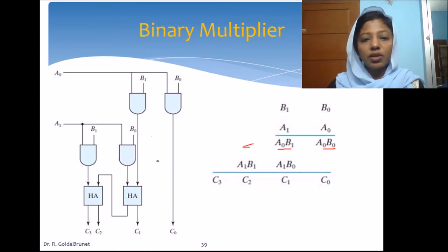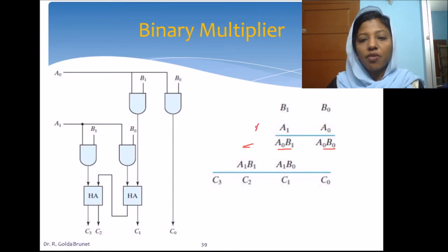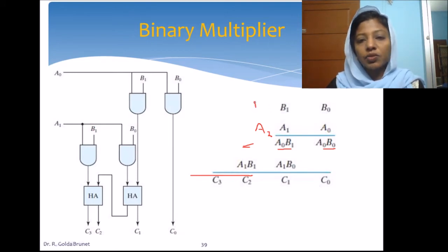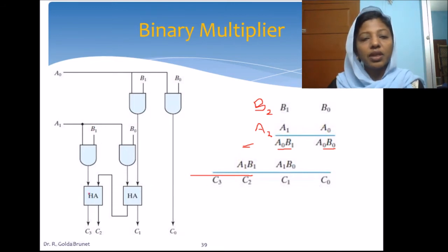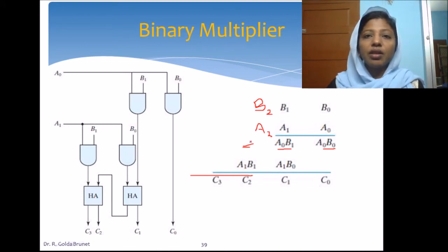The problem with this circuit is that it is capable of adding only two bits at a time because we are using a half adder. Suppose if the multiplier had three bits — that is, we have one more bit A2 — then we will have another partial product. If we also have one more bit in the multiplicand, then we will have three bits to add at one position, and that means this half adder will not be able to perform the addition. So we need to modify the circuit to suit any general n-bit multiplication.